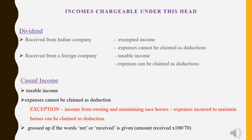Moving on to the next income — casual income. As the name tells you, it is income earned casually or without any stipulation. Examples of casual income are lottery winnings, card games, puzzles, gambling, betting, etc. This income is taxable and expenses cannot be claimed. However, there is an exception: if the income is earned by the assessee from the activity of owning and maintaining race horses, then expenses can be claimed.